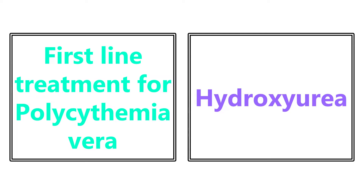First-line treatment for polycythemia vera is hydroxyurea. In a vignette, they may describe a patient who feels very itchy after being in a warm, crowded place or after taking a shower — if you see that, think polycythemia vera. Treatment is hydroxyurea.